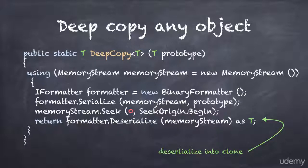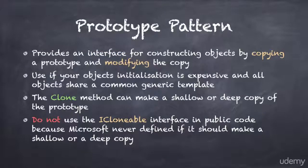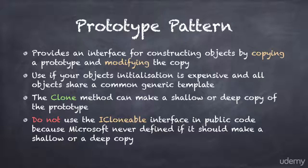Here is a summary of what we have learned. The Prototype pattern provides an interface for constructing objects by copying a prototype and modifying the copy. Use this pattern if your object's initialization is expensive and all objects share a common generic template. The clone method can either make a shallow or a deep copy of the prototype. A quick and easy way to make a deep copy is by serializing the prototype into a memory stream and deserializing it back into a clone. You should never use the iClonable interface in public code, because Microsoft never defined if it should make a shallow or a deep copy.